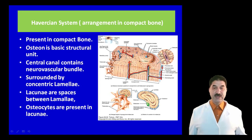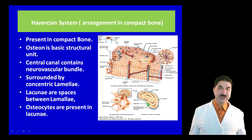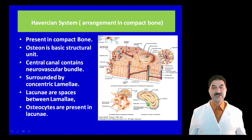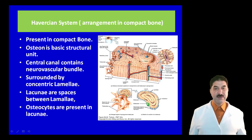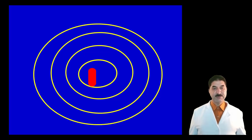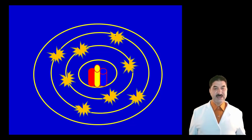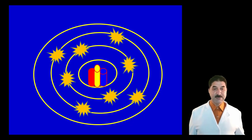The Haversian system is present in compact bone but not in spongy bone or sesamoid bones. The osteon is the basic structural unit of compact bone. It consists of a central canal containing the neurovascular bundle — nerves, vessels, and lymphatics — surrounded by concentric lamellae. Between the lamellae are spaces called lacunae, and osteocytes are present in the lacunae. As shown in the animation, the concentric lamellae are separated by lacunae, with the neurovascular bundle lying in the central canal.